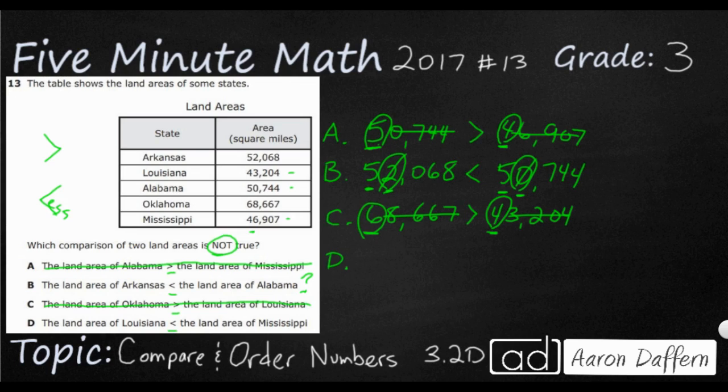The land area of Louisiana, that's 43,204, is less than the land area of Mississippi, 46,907. Let's look at the largest place value. Four and four. Those are even. So we're going to go to the next one.